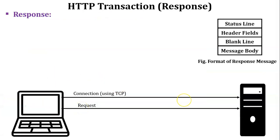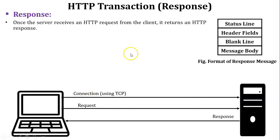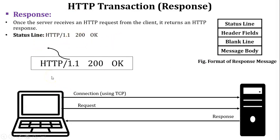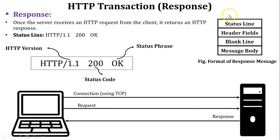The next component is response. The response message is sent from server to client. This figure shows the format of the response message. There is a minor difference between the format of the request message and the response message: in the request message format the first field is the request line, whereas in the response message format the first field is the status line. The remaining three fields are the same. For example, HTTP/1.1 200 OK — HTTP/1.1 is the version, 200 is the status code, and OK is the status phrase — meaning the request is succeeded.